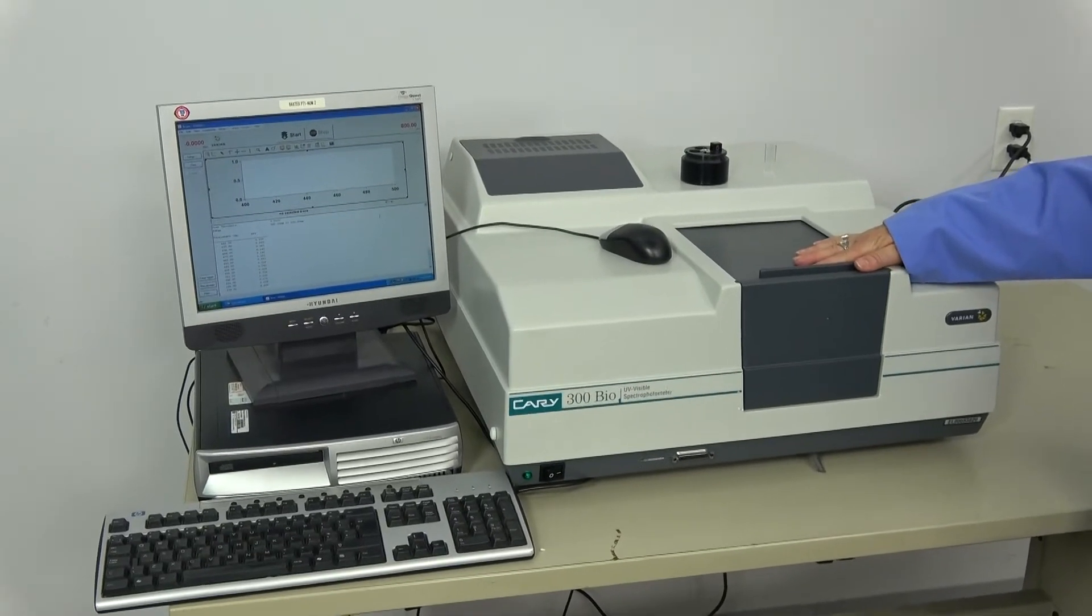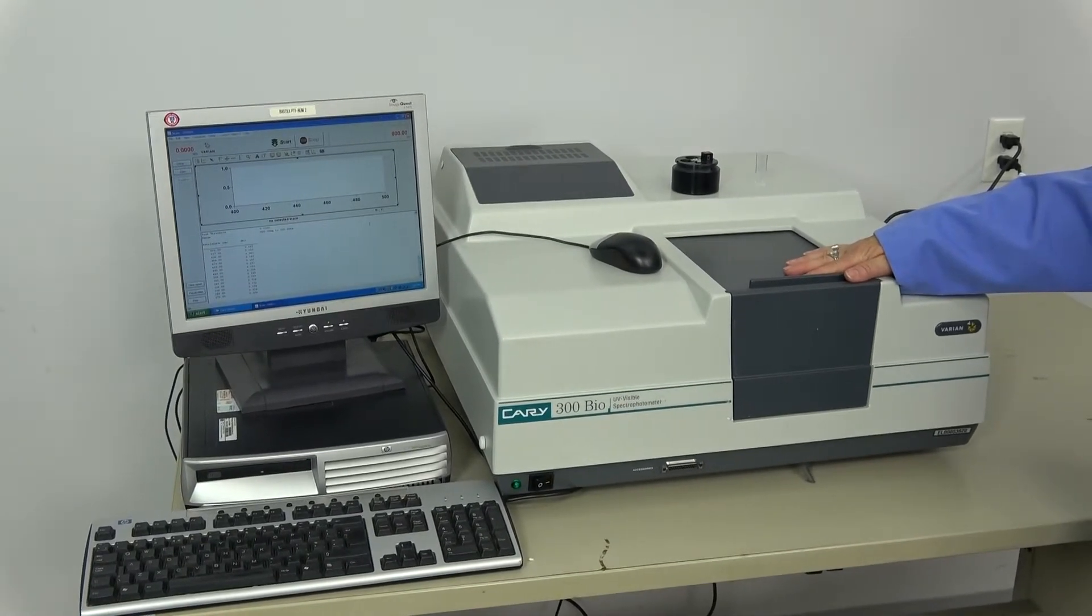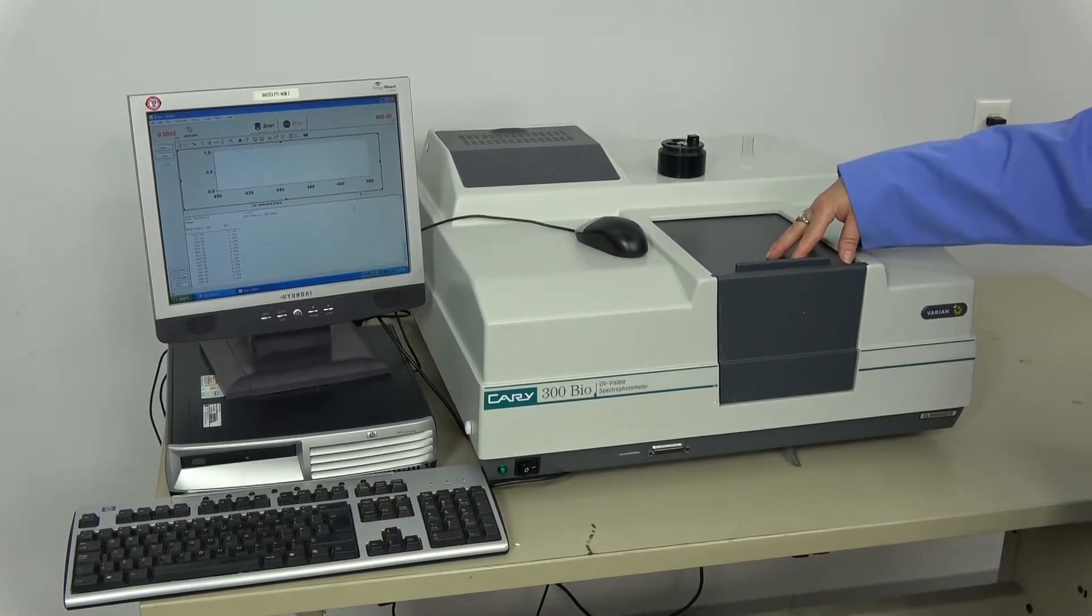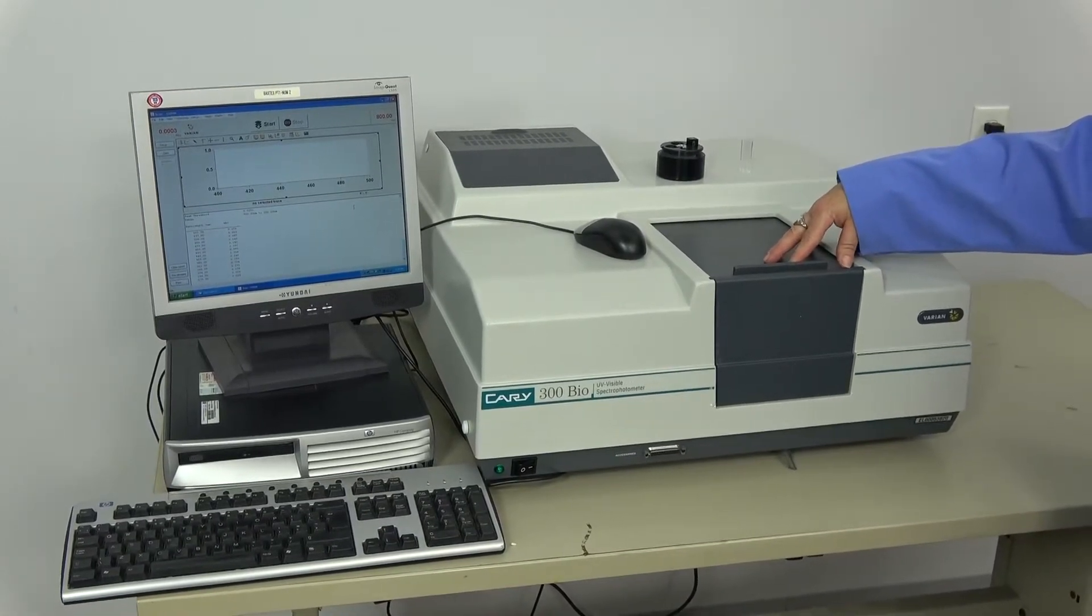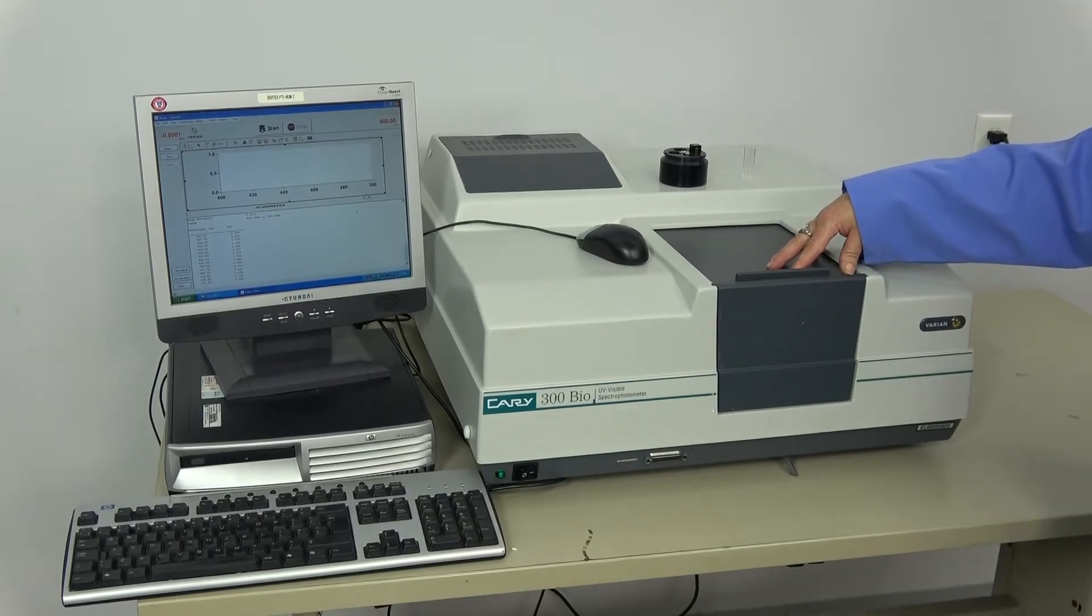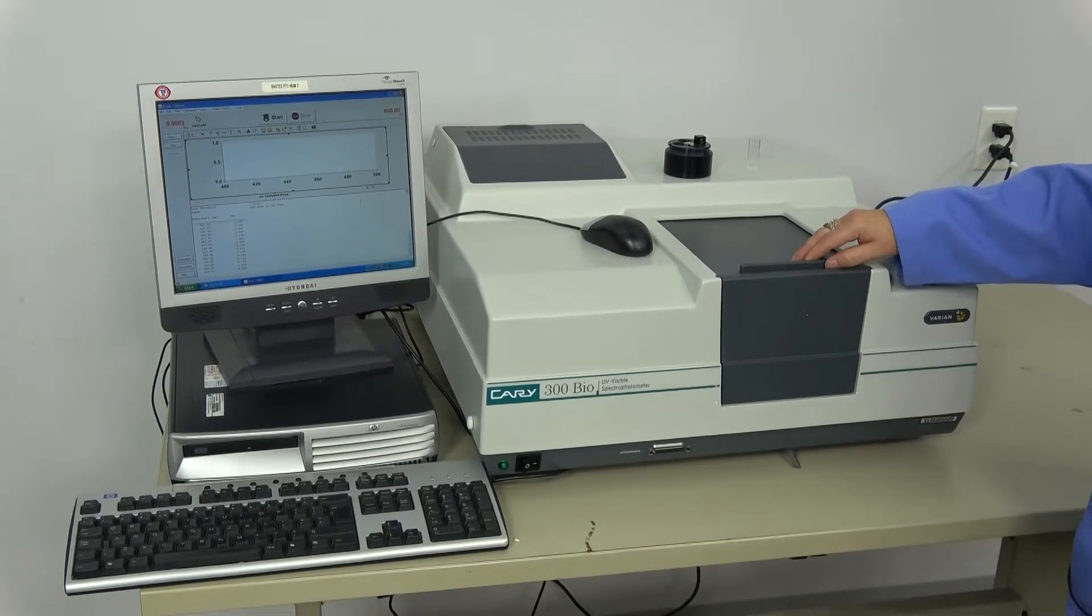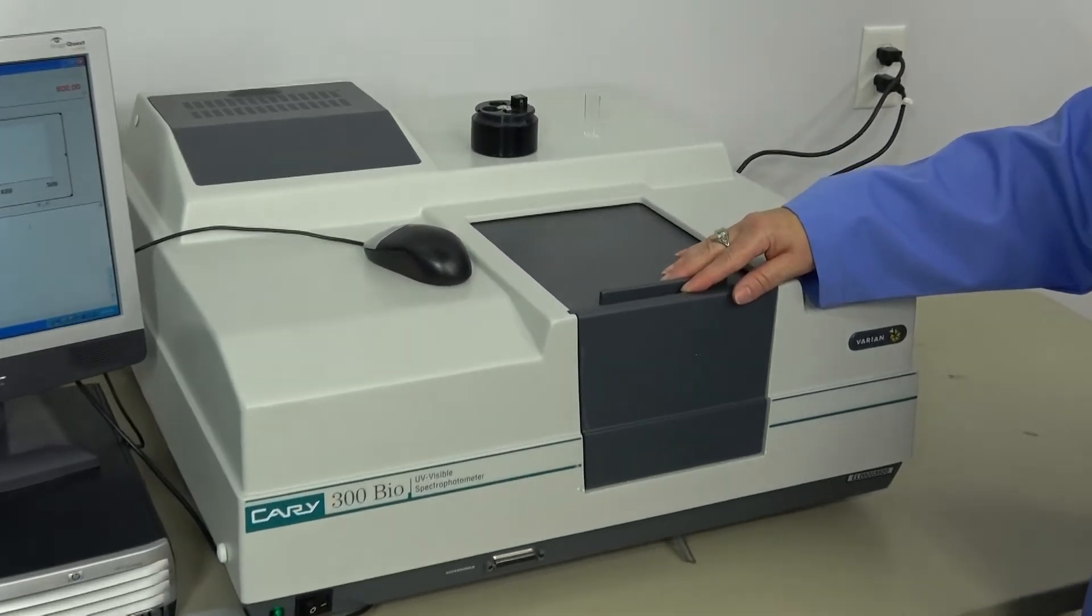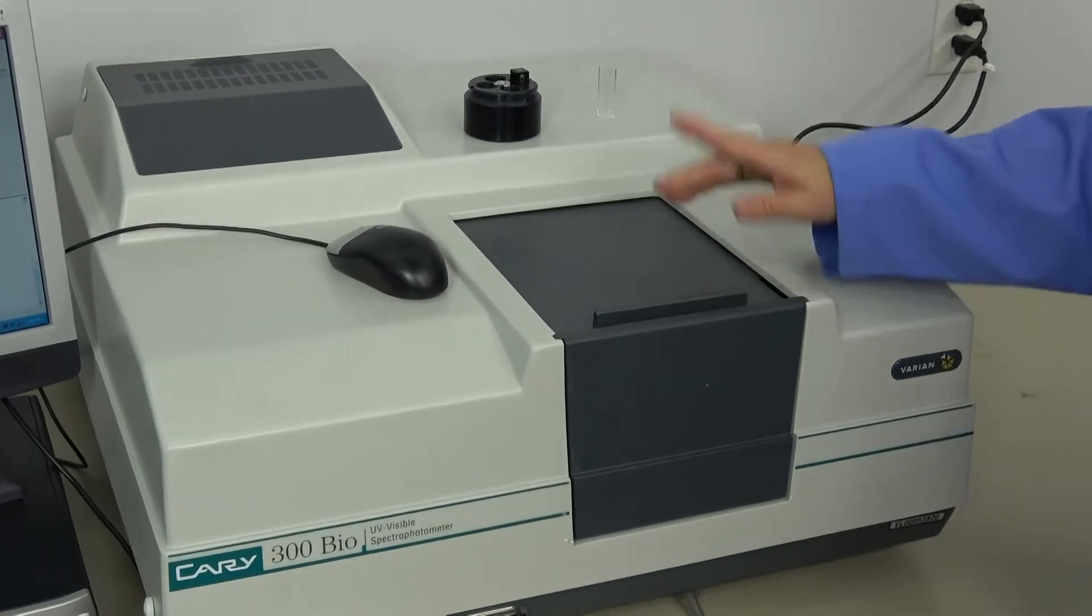This means it collects the absorbance of certain samples when exposed to energy at UV and visible wavelengths. This can help to identify certain elements, chemical bonds, amino acids, and so forth. Today we're going to run it through a little demonstration using a known sample of Holmium Oxide.